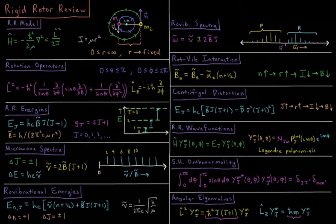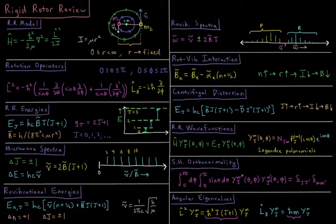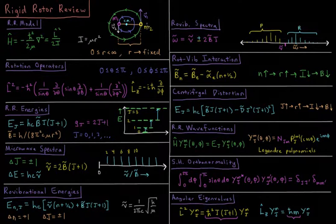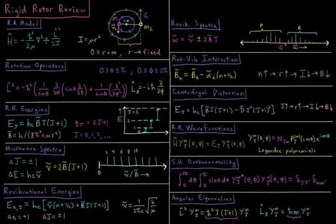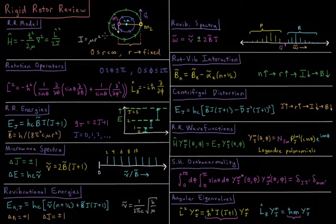We start with our rigid rotor model where we have a diatomic molecule with each atom of mass 1 and mass 2, both rotating around their common center of mass at some fixed bond length r. The Hamiltonian for this system is just the kinetic energy operator, minus h-bar squared over 2 mu del squared, mu being the reduced mass. This reduces to the angular momentum squared operator divided by 2 times the moment of inertia, where the moment of inertia is the reduced mass times the bond length squared.